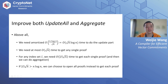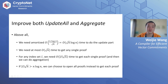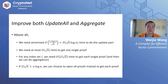There is a simple optimization: if |I| * sqrt(n) exceeds n log n, meaning the set is very large, we can just choose to open all proofs at once instead of retrieving each single proof one by one.